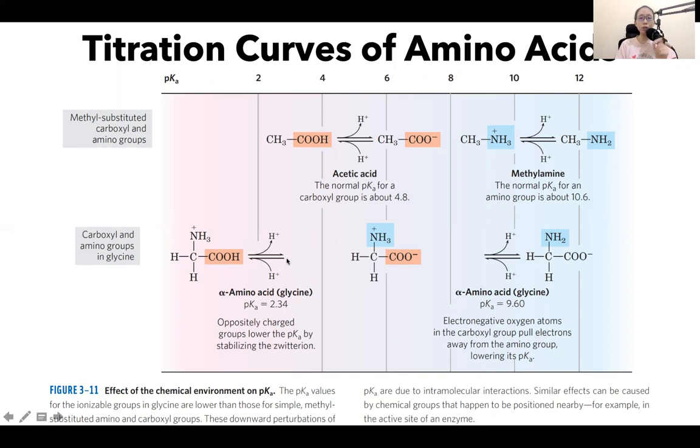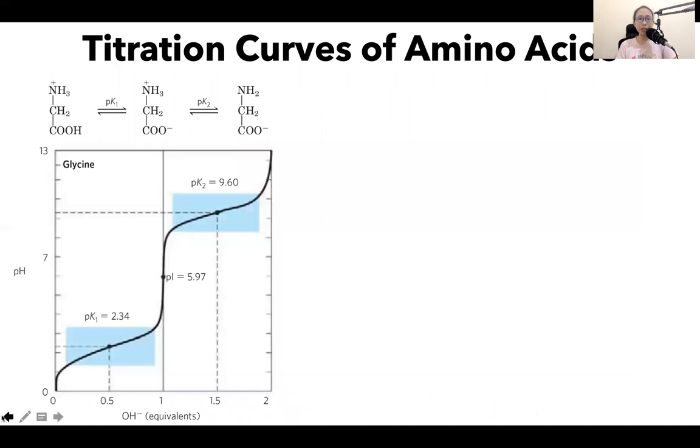Compared to the carboxyl group of a simple organic molecule such as acetic acid, that is why in the titration curve of glycine, the first pKa value is lower than that of an organic carboxyl functional group.